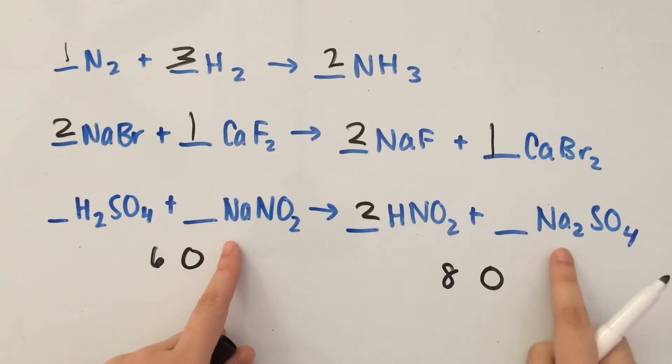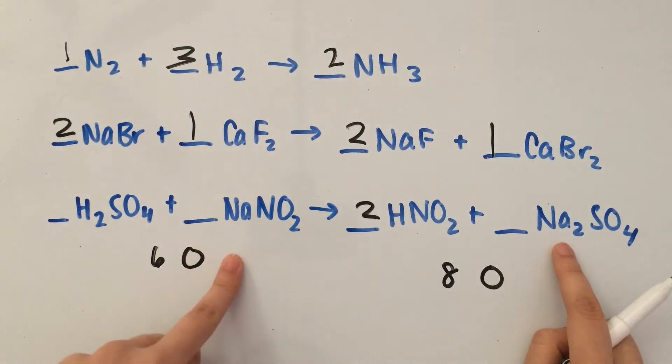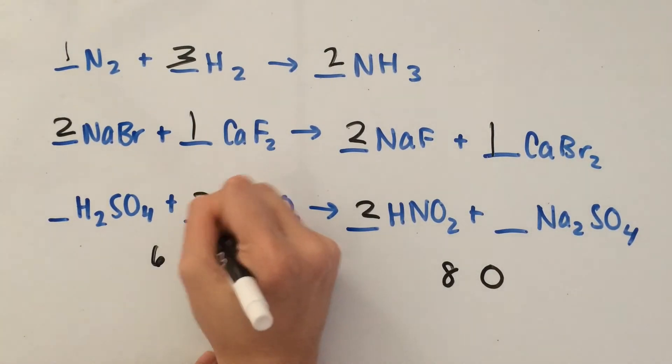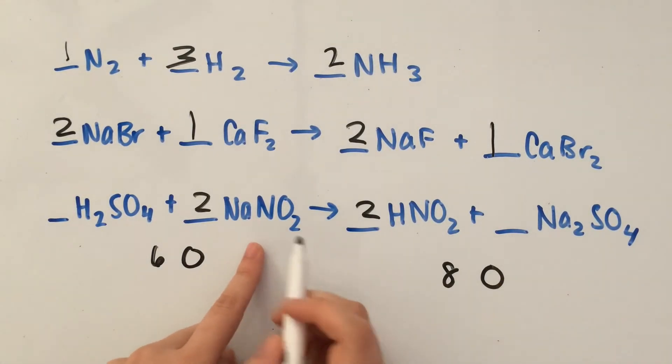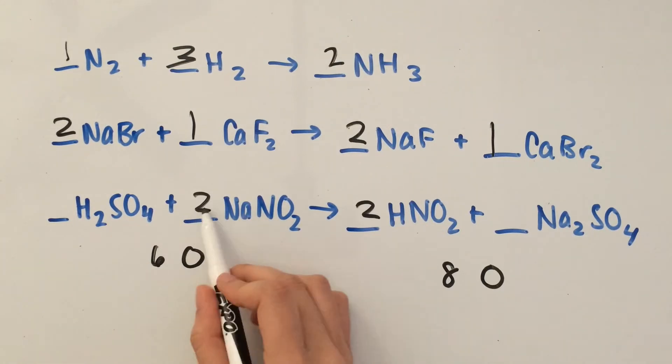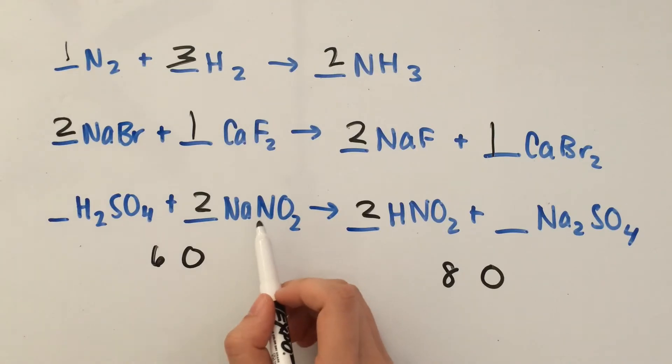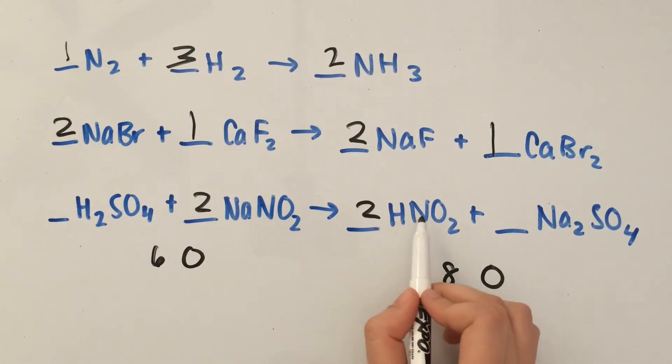I see that we have two Na's and one Na on the left side, so let's multiply that by two to balance out the sodiums. Now we have two nitrogens because two times all of this will give you two nitrogens, and we have two nitrogens, so the nitrogens balance out.